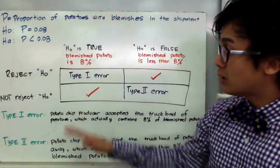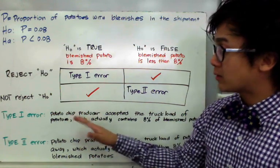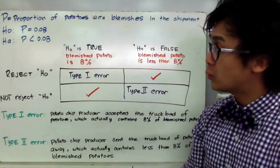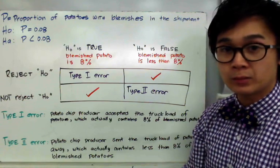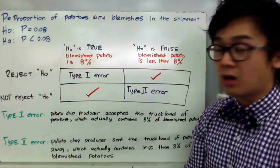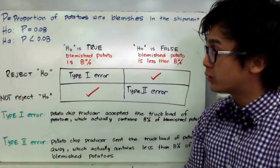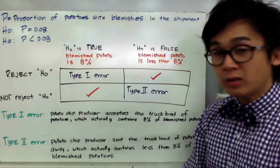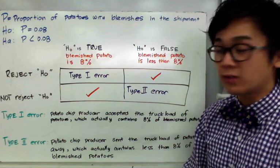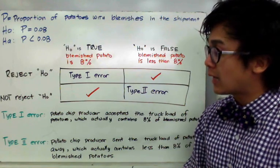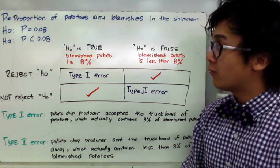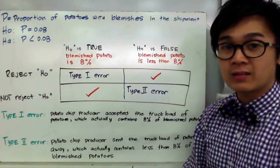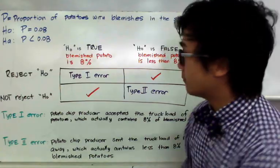Those are the types of errors we might commit when using a sample of potatoes from the supplier's truckload. We will now discuss the consequences of type 1 and type 2 errors for this particular word problem in the next slide.